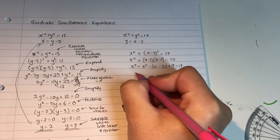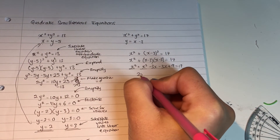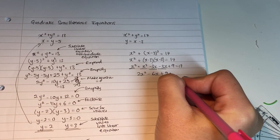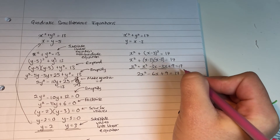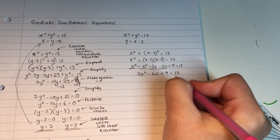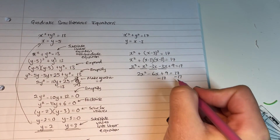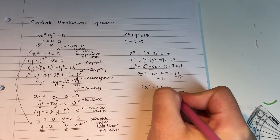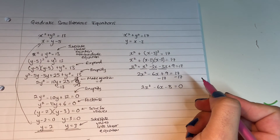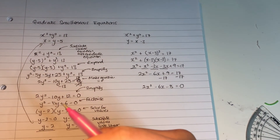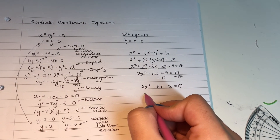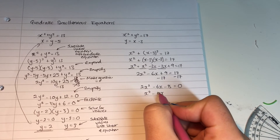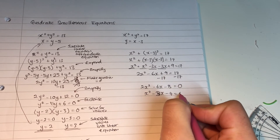My next step is to simplify. x² + x² gives me 2x², and −3x − 3x gives me −6x, so 2x² − 6x + 9 = 17. Next I need to make the equation equal to 0, so I subtract 17 from both sides, leaving 2x² − 6x − 8 = 0. Before I factorize I simplify by dividing everything by 2, giving x² − 3x − 4 = 0.